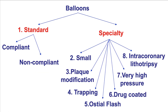In this video, we'll discuss the various types of balloons. There are actually eight different types of balloons: the standard balloons, either compliant or non-compliant; small balloons; plaque modification balloons; trapping balloons; the osteo-fluss balloon; drug-coated balloons; the very high-pressure balloon; and the intracoronary lithotripsy balloon.